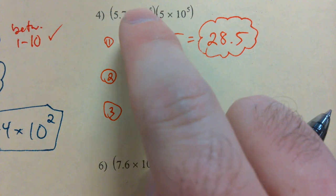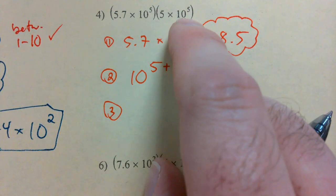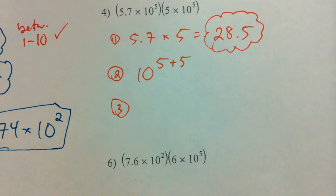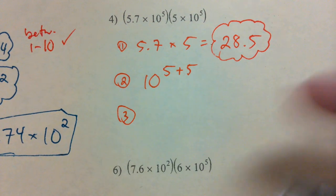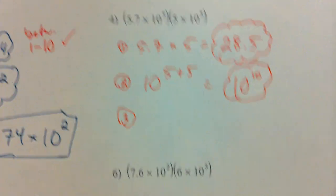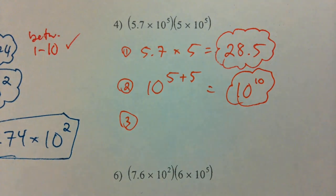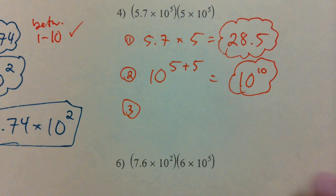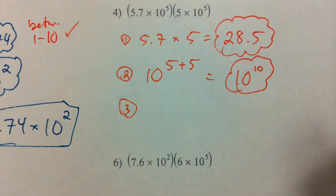10 to the 5th times 10 to the 5th, like bases being multiplied, we add the exponents to give us 10 to the 10th. Okay, Troy, Vincent, please stop talking. Thank you.